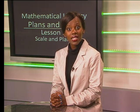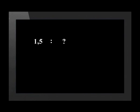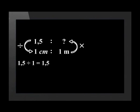The table measures 1.5 centimetres. Let's calculate how big this is in reality. First we write the ratio we want, then we write the given scale underneath. Now we use the arrows to calculate. 1.5 divided by 1 is equal to 1.5, and 1.5 multiplied by 1 is equal to 1.5. So we can see that 1.5 centimetres on the floor plan is equal to 1.5 metres in reality.